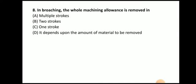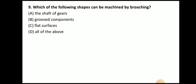Next question: in broaching, the whole machining allowance is removed in how many strokes? The answer is one stroke — removing the entire material in one stroke is the beauty of broaching. Regarding shapes that can be machined: shaft of gears, grooved components, flat surfaces — all of the above, making broaching a versatile operation.